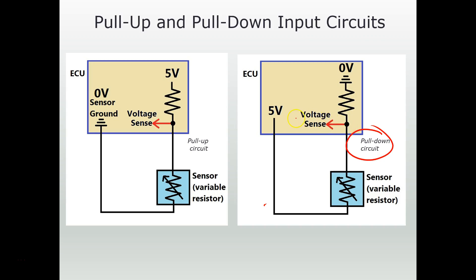So you might be asking: how do I know in a car which type of circuit I'm dealing with? I don't usually get to see this in my wiring diagram. I'll give you three ways to tell whether you're dealing with a pull-up or pull-down circuit. Number one: look at your wiring diagram. There's a possibility you'll see this, and even if you don't, you may get other helpful information.